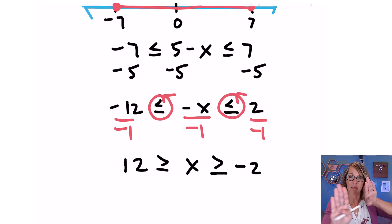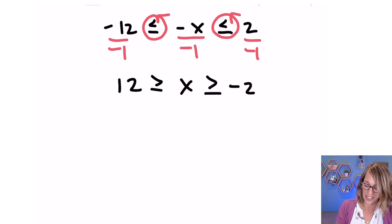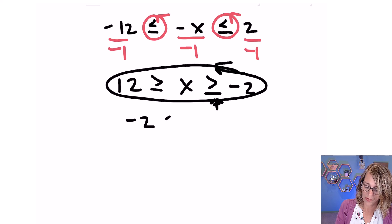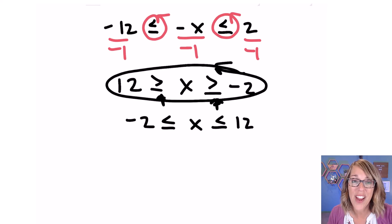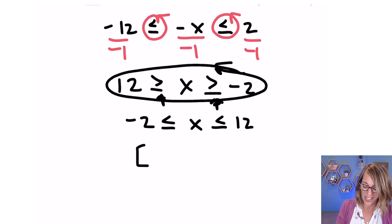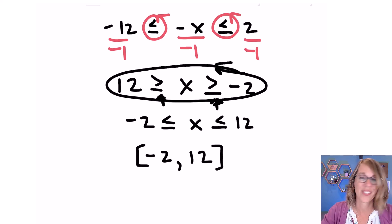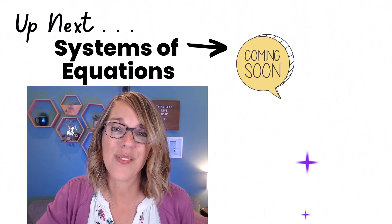I'm going to take this inequality and flip it around so that it reads in order and makes more sense. Flipping it gives me: negative two is less than or equal to x is less than or equal to twelve. Now I can put this into set builder notation, graph it on the number line, or express it as an interval. I'm including both the lower bound negative two and the upper bound twelve, so I use square brackets around both: [-2, 12]. You guys are doing fantastic — we're going to start looking at systems of equations in my next video. You got this.